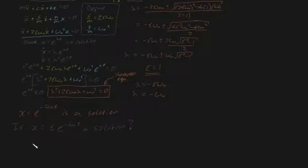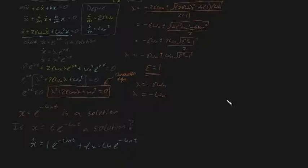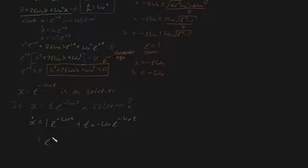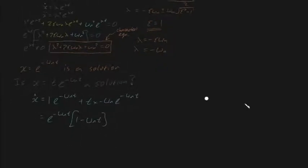Let's evaluate this. We know that x dot is going to be, using the product rule, 1 times e to the minus omega n t, plus t times minus omega n times e to the minus omega n t. Simplifying by grouping, we get x dot equals e to the minus omega n t times 1 minus omega n t. Unfortunately that's not enough — we also need to find the double derivative.